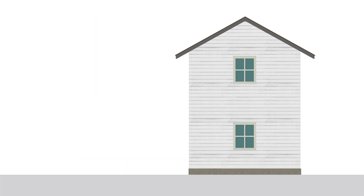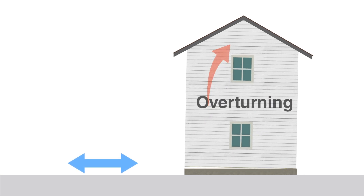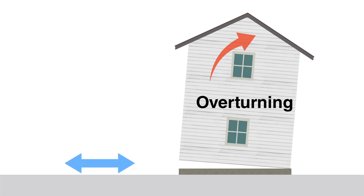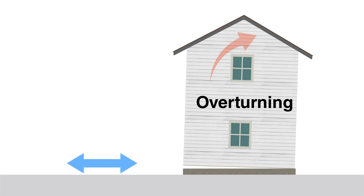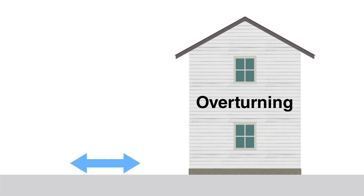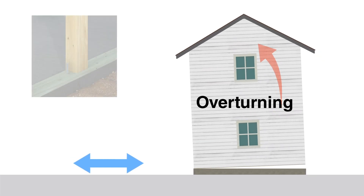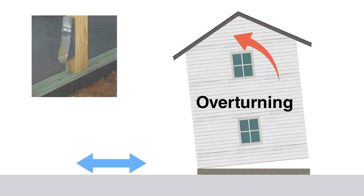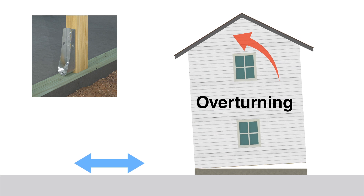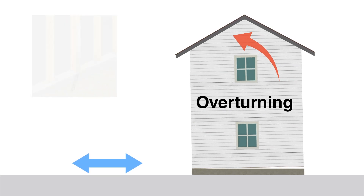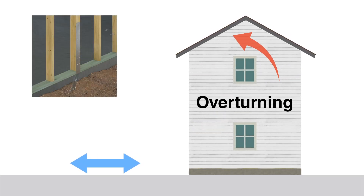Lastly, if racking and sliding are restrained, lateral forces can cause overturning such that the walls of the structure lift or rotate off the foundation. Overturning can be resisted by anchoring the walls to the foundation using hull downs or tension ties.